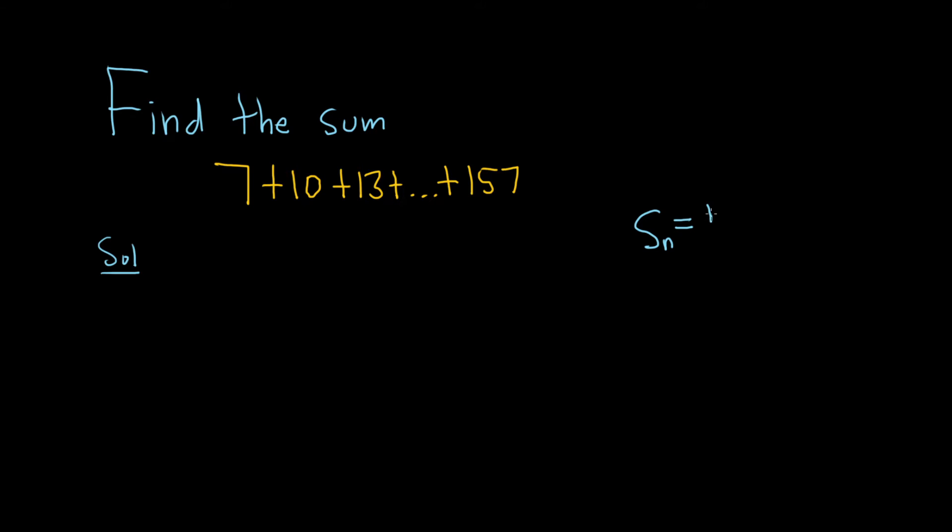The formula is n times the first term, which we know is 7, plus the nth term, which we have is 157, over 2. So the only thing we're missing is n because we know that a1 is 7, and we know that a sub n is 157, the last one. The problem is we don't know n. We don't know which one this is in the sum.